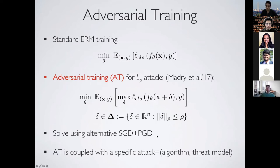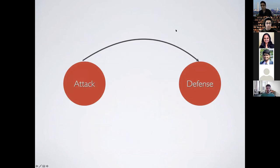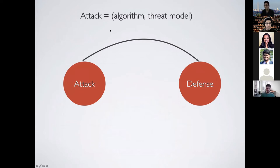We solve adversarial training using alternating SGD for the outer minimization and PGD for the inner maximization, which is the attack problem. Adversarial training is coupled with a specific attack for solving the inner maximization — what attack algorithm and what threat model we use to constrain the perturbation. There are many other heuristic defenses; for example, six or seven defenses were introduced at ICLR 2018 for different threat models.